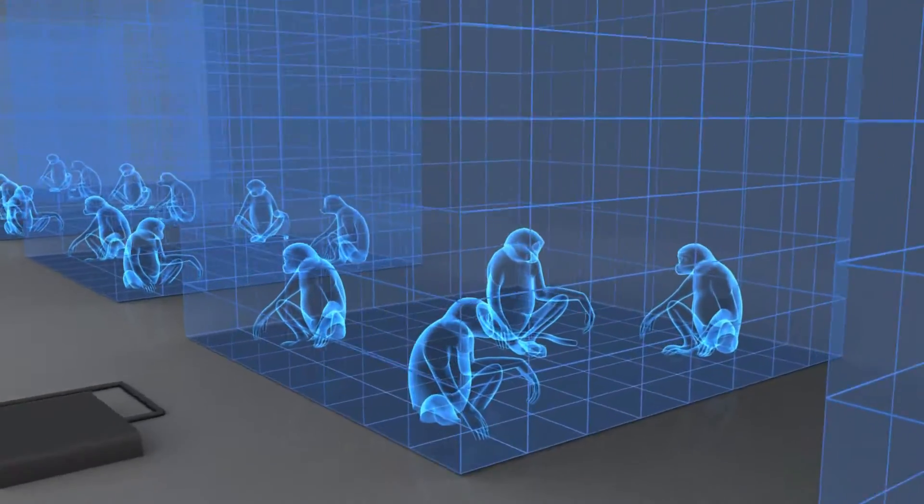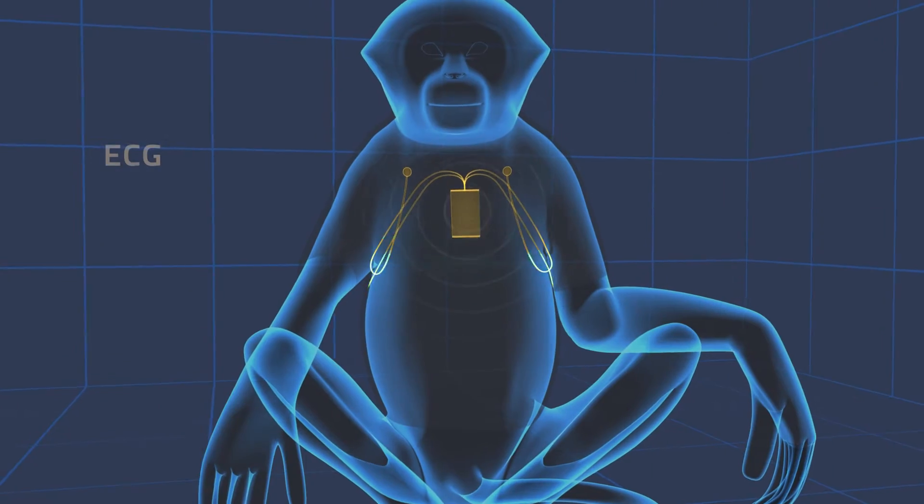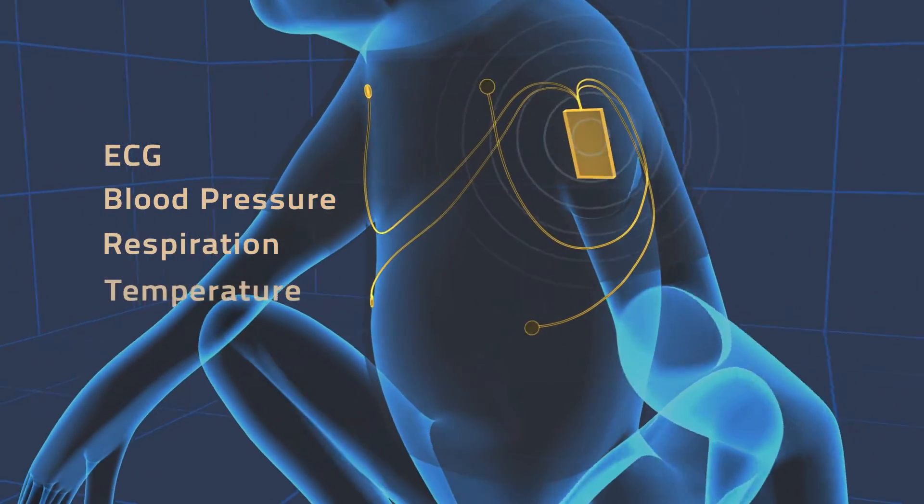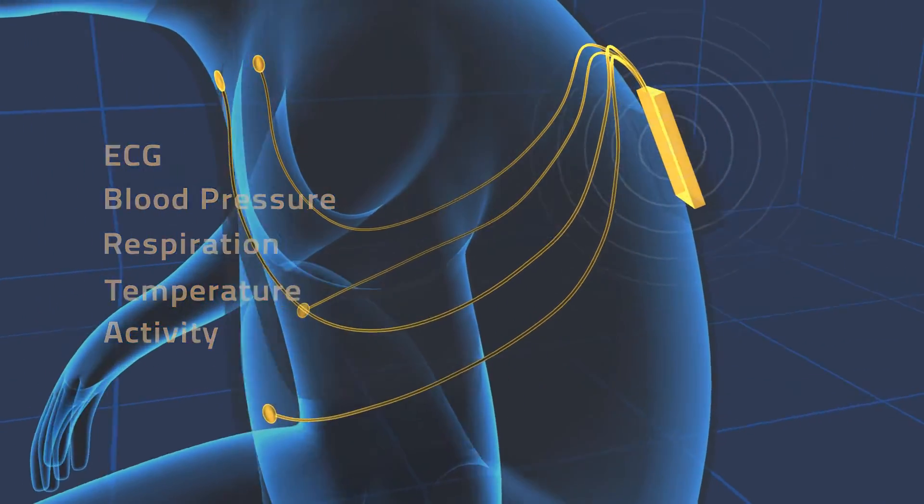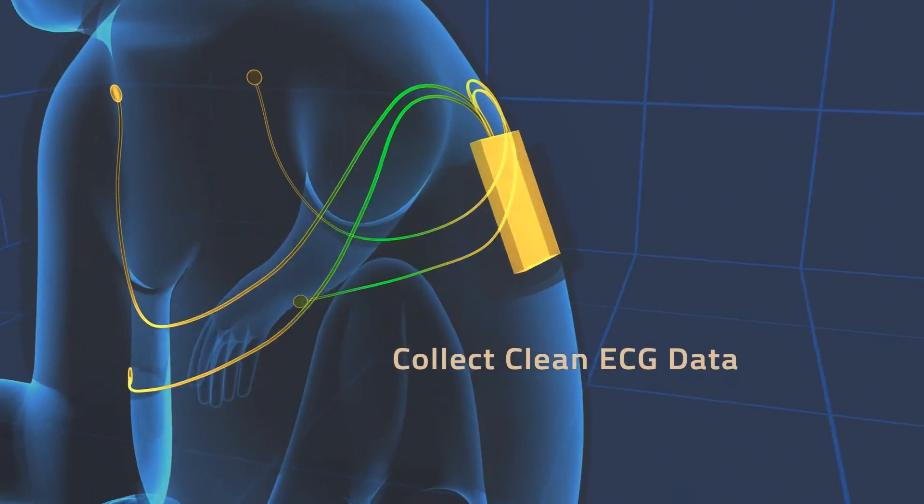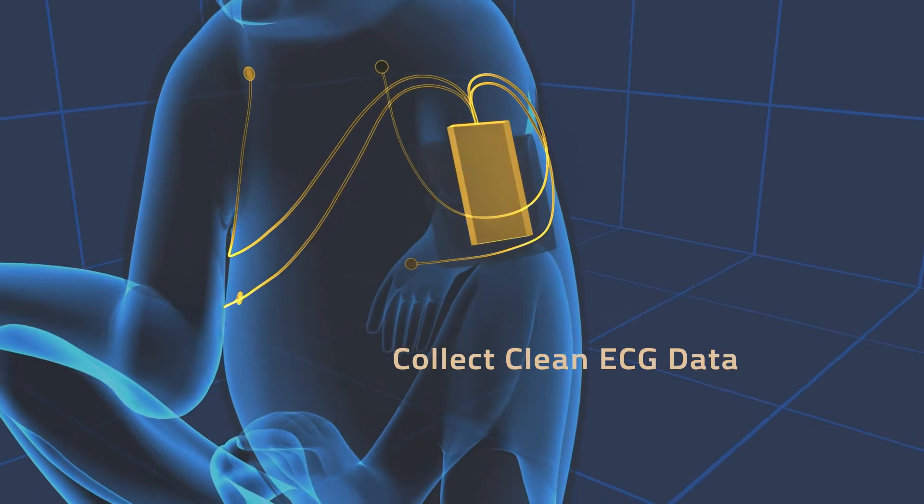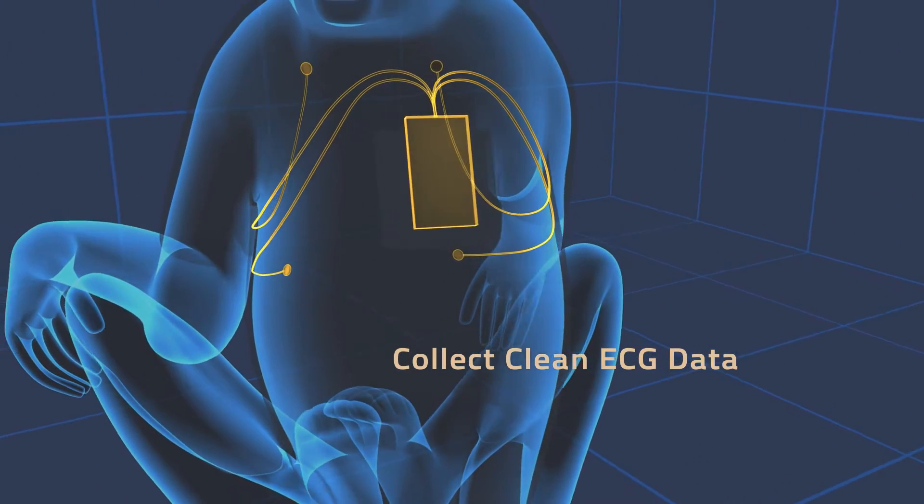JET collects various parameters including ECG, blood pressure, respiration, temperature, and activity from freely moving, unstressed animals. The JET device provides clean ECGs with clear morphologies at a size and weight that minimize animal impact.